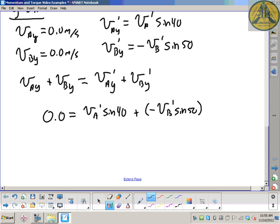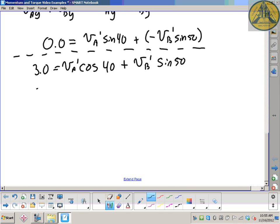Now we do have two equations and two unknown variables. I'll summarize those down here. The first equation, 3 equals VA prime cos 40 plus VB prime cos 50. Remember the word prime just means after the collision. Don't confuse it with your math. And then the Y direction, VA prime sine 40 minus VB prime sine 50. So we have two equations.